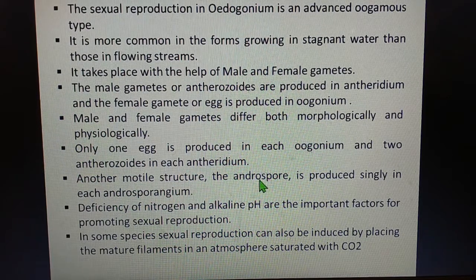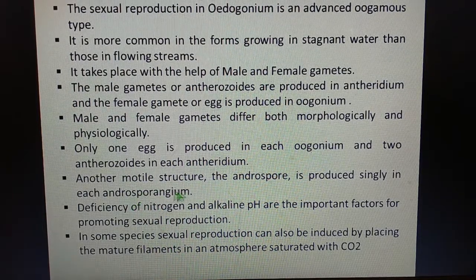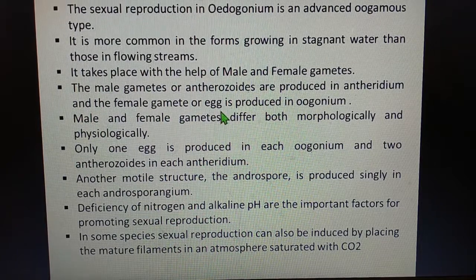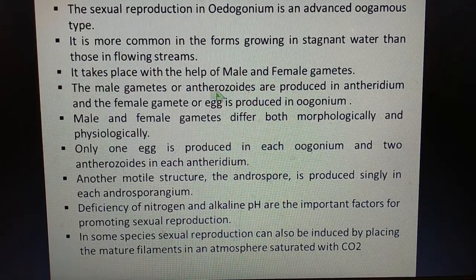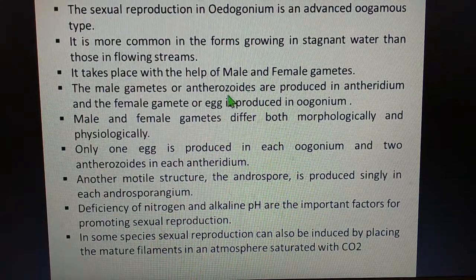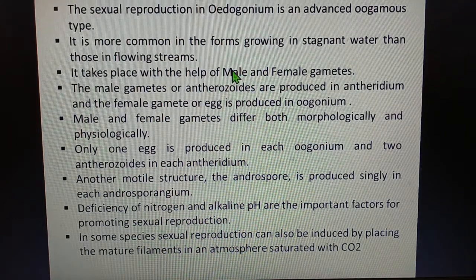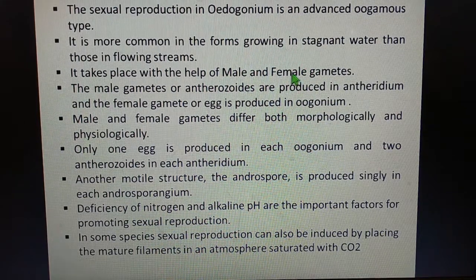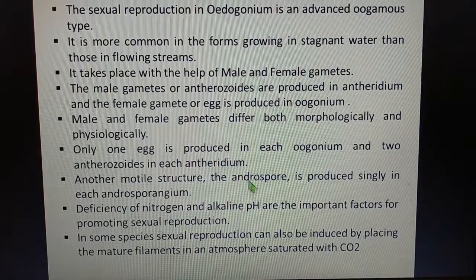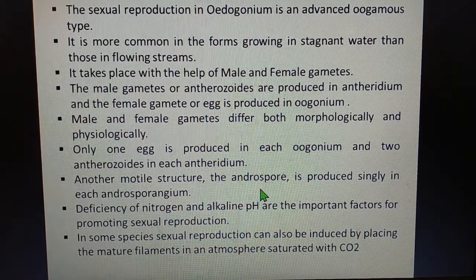Another motile structure, the androspore, is produced singly in each androsporangium. When we study the antheridium in detail, you will come to know the difference between antherozoids and androspores. The antherozoids and eggs are the male and female gametes respectively — they will fertilize to give rise to a zygote which will eventually give rise to a major filament. The androspore, formed in the androsporangium, will give rise only to the dwarf male.